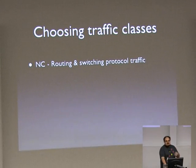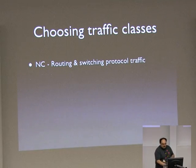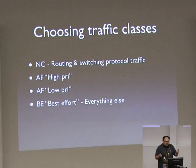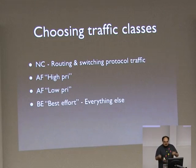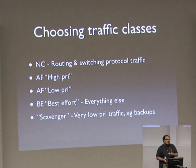Traffic classes: there are some conventions. There's a convention that you have a network control class that is the highest priority. No traffic outside the network should ever be classified this way — you don't put DNS, you don't put SSH in network control. BGP, LLDP, spanning tree — those go in network control. High priority traffic — assured forwarding, or AF, is the general nomenclature, sometimes numbers, sometimes extra names. So high priority and low priority — everything else goes in a best effort class. Best effort means no effort. And you may consider having something called a scavenger class for your very low priority or very loss-tolerant traffic, where some guy torrenting to his laptop is actually higher priority than this traffic.